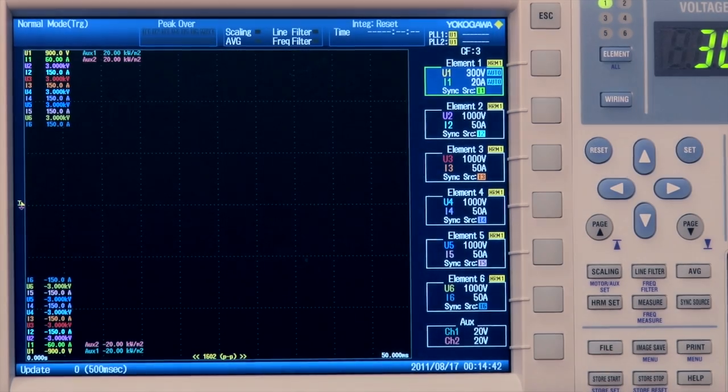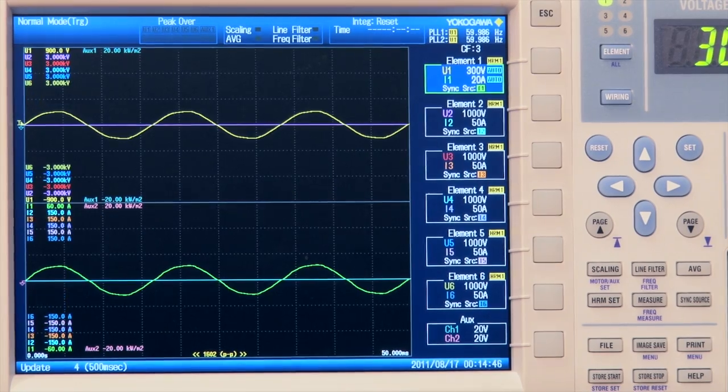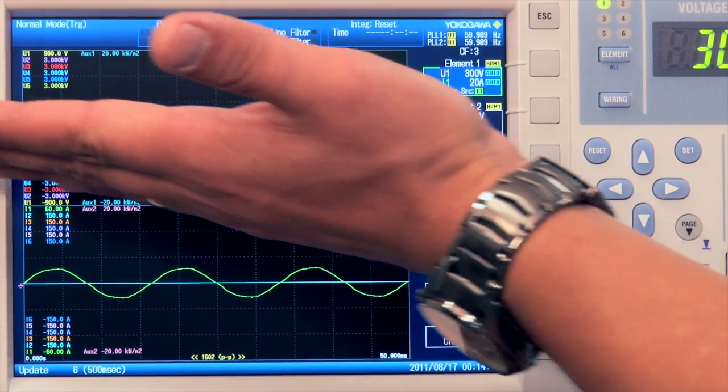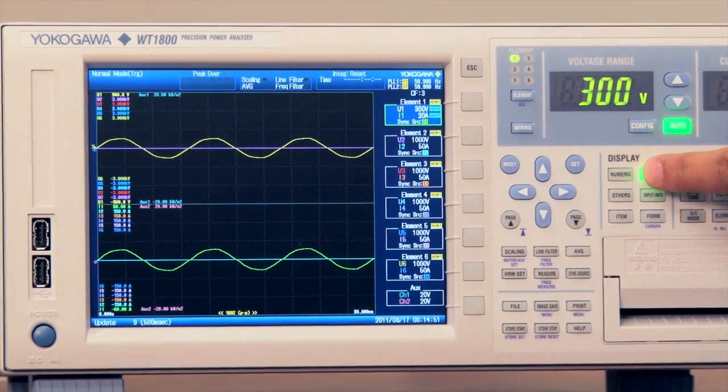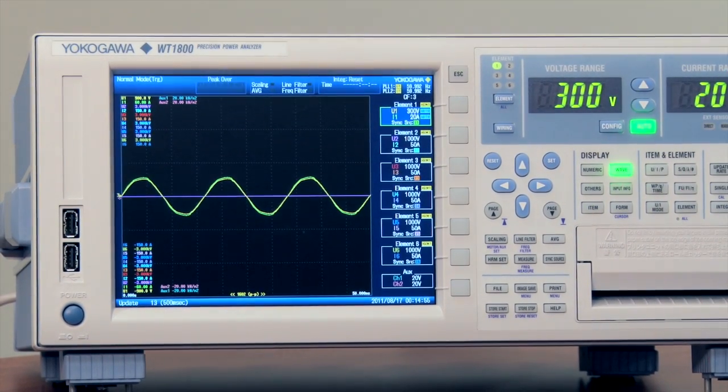If you wanted to view waveforms you just hit the waveform key, and by hitting the waveform key multiple times that will change the number of separate grids depending on the amount of waveforms you're trying to view, until eventually you get back to a single display.